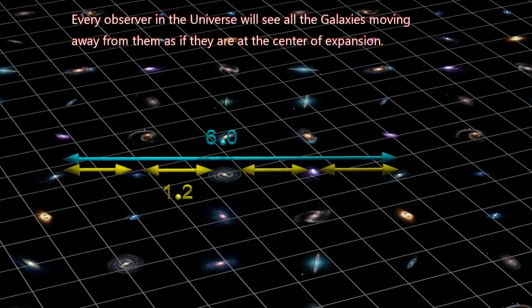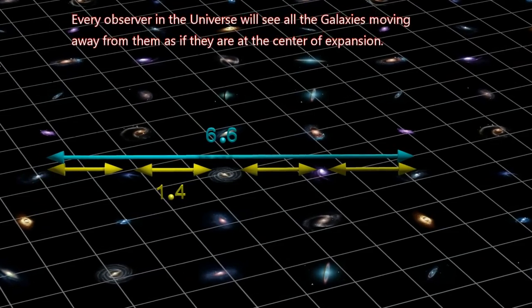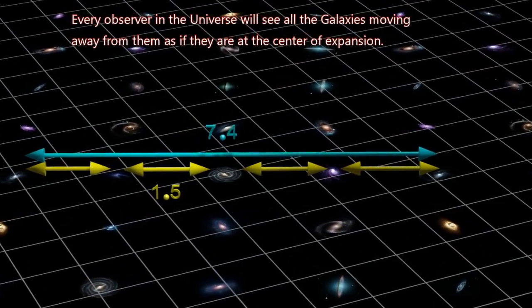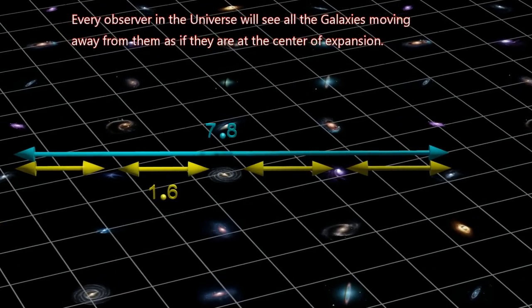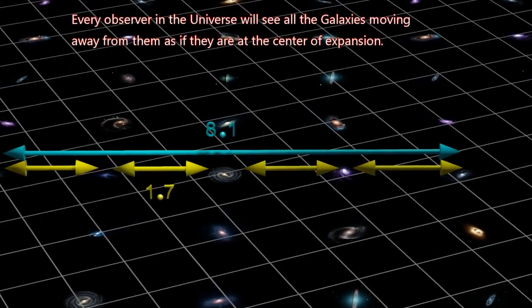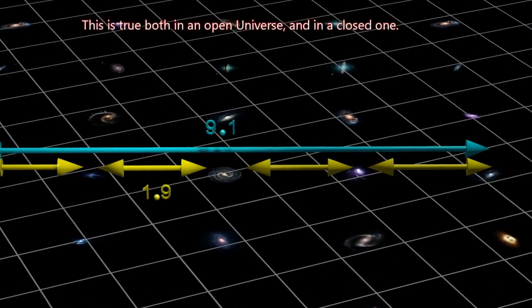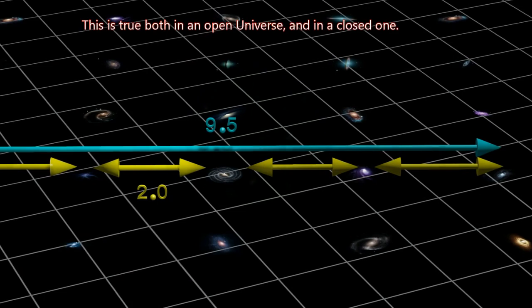Every observer in the universe will see all the galaxies moving away from them as if they are at the center of expansion. This is true both in an open universe and in a closed one.